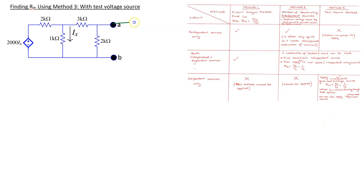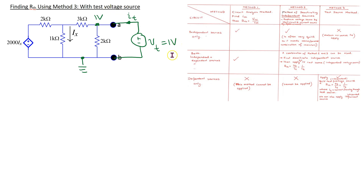According to this method, we need to apply a test voltage or a test current source and then find the ratio of the test voltage and the test current, and this gives the Thevenin equivalent resistance. Suppose we apply a one volt test voltage source to this circuit. So Vt is one volt, and this is the current IT flowing into the circuit. Our circuit analysis task is to find IT. We can find IT using either the node voltage method or mesh current method. Suppose we use the node voltage method, then we can ground this node.